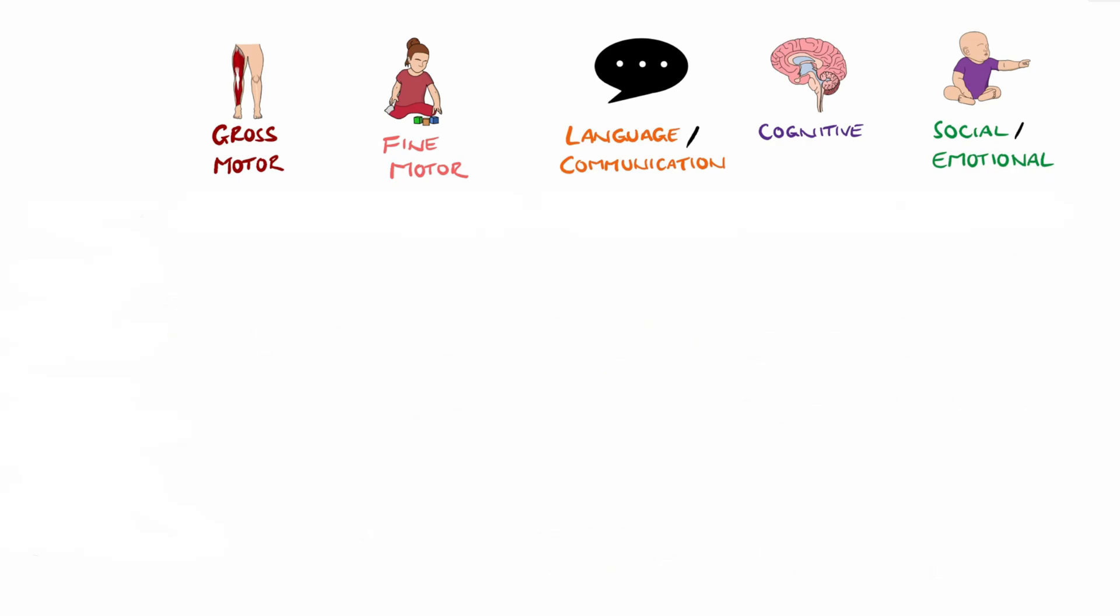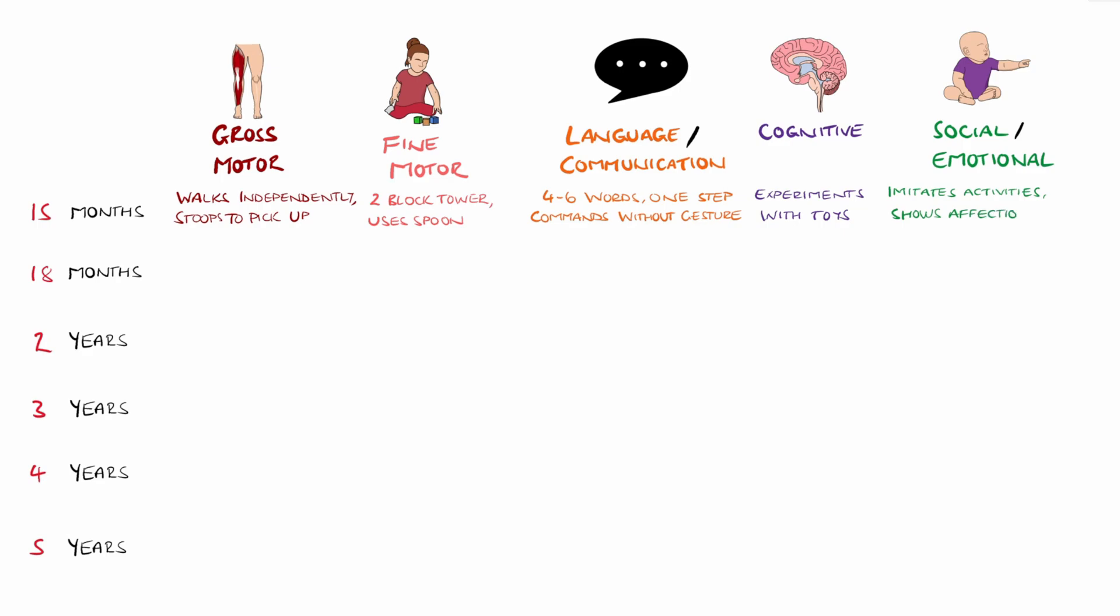Socially, they can point at wanted items and can explore from a secure base. At 15 months, they can walk independently and they often stoop to pick up items. In terms of fine motor skills, they can build two-block towers and they tend to use spoons. Their language can involve four to six words and they now follow one-step commands without a gesture. Cognitively, they can experiment with toys. Socially, they can imitate activities and show affection.